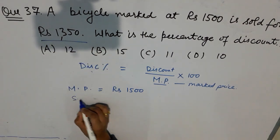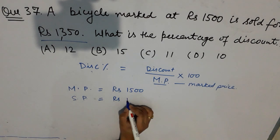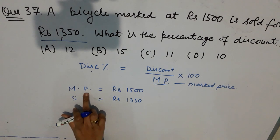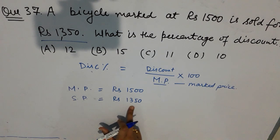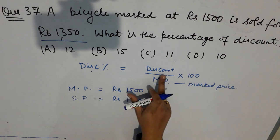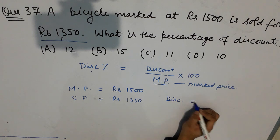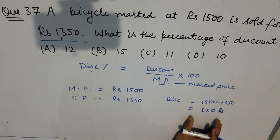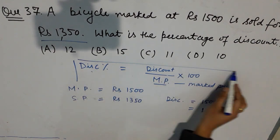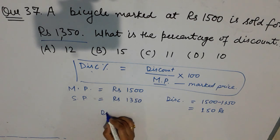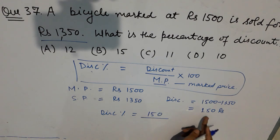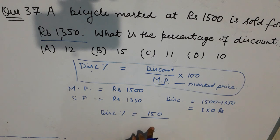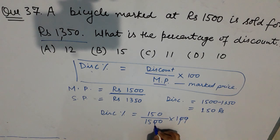The selling price is 1350. The discount given is 1500 − 1350 = 150 rupees. According to the formula, discount percentage = (150 / 1500) × 100. Cancel it out — that is 10%. So option D is correct.